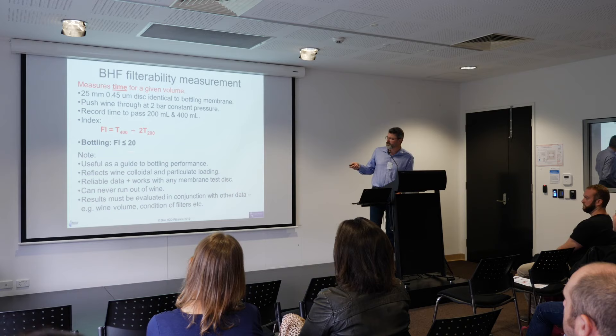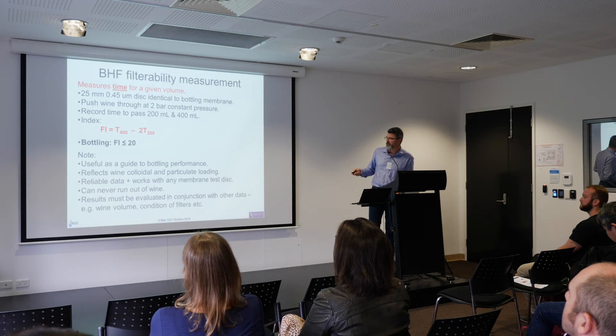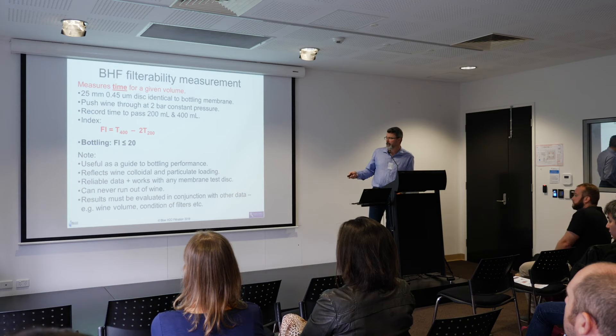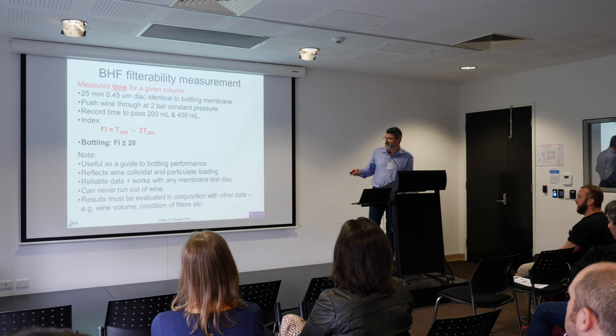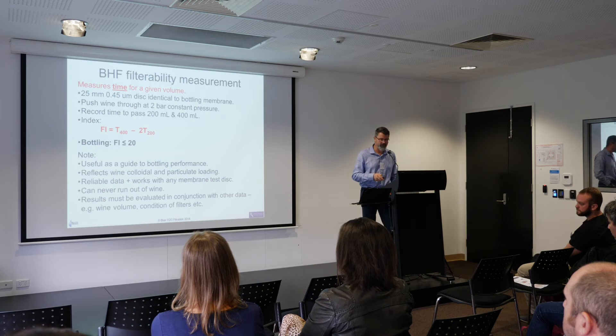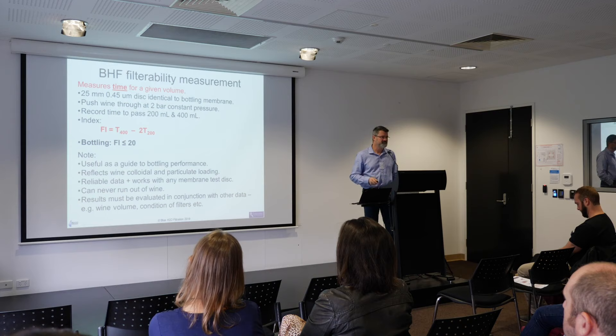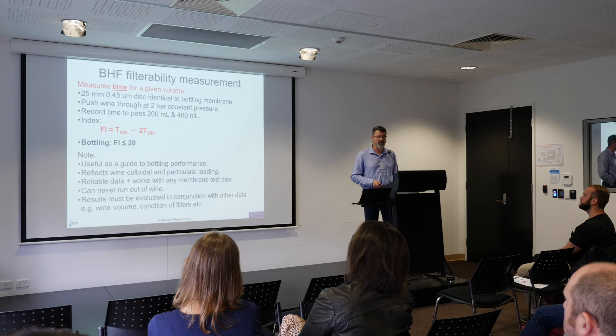It's a useful guide — not the be-all and end-all — to how things are going to go at bottling. It takes colloids into account because you're going through the membrane, and you can never run out of wine because it's volume-based. Results need to be taken in conjunction with other data. If filterability is borderline with a 5,000 litre batch and ten membrane housings, it's probably not an issue — but 200,000 litres through a single cartridge would be a problem.